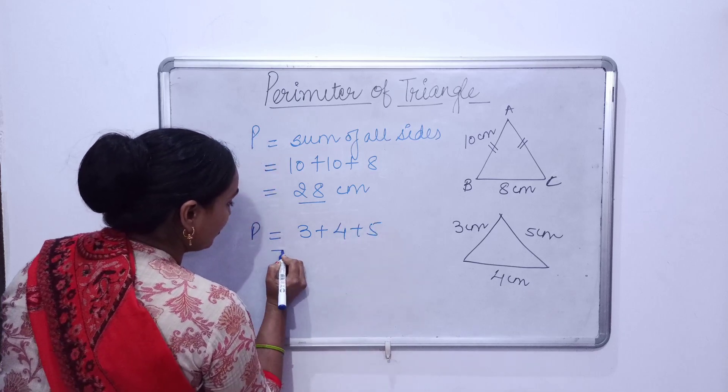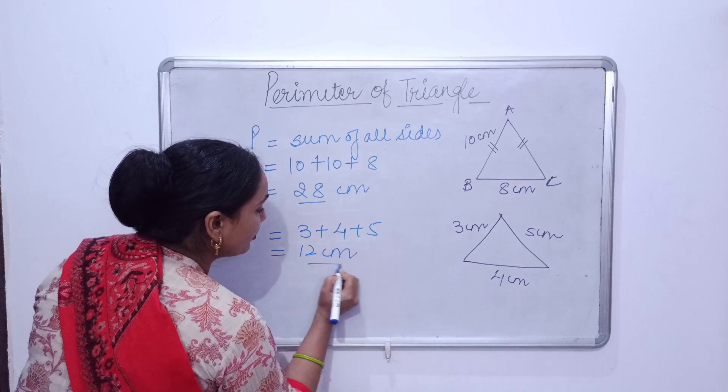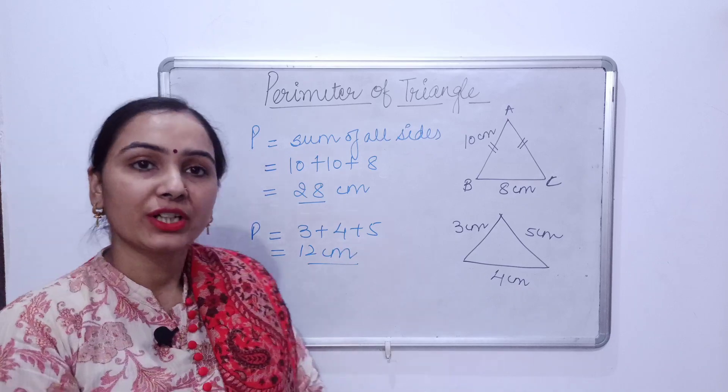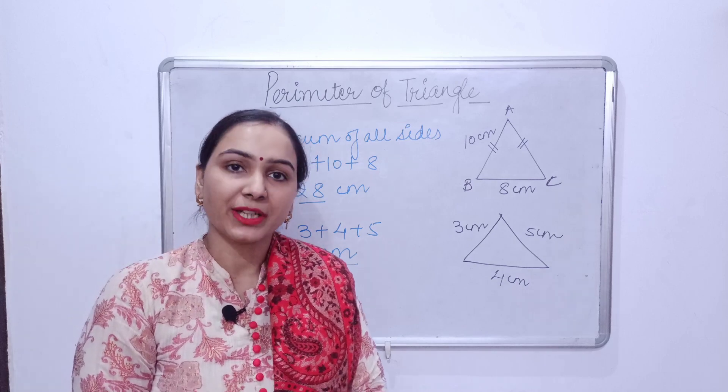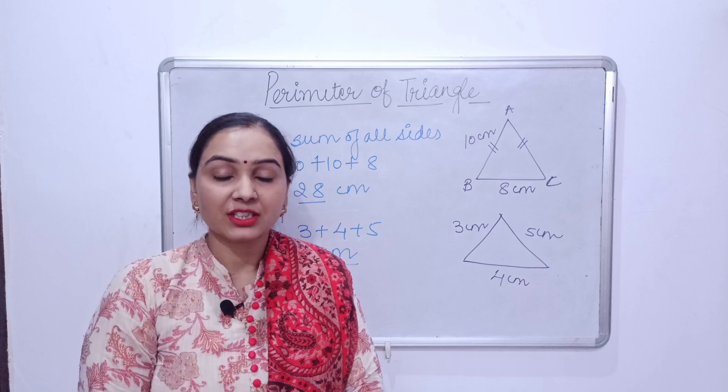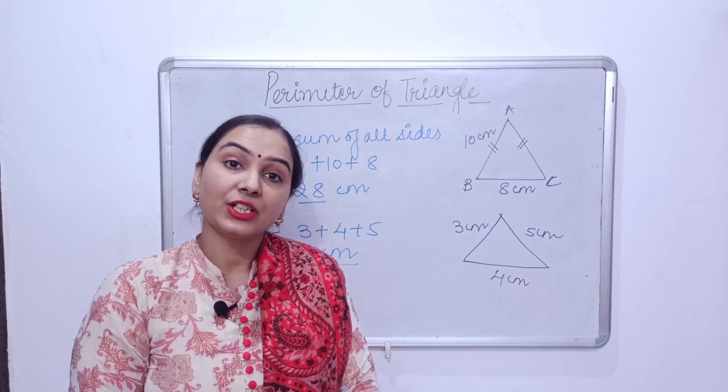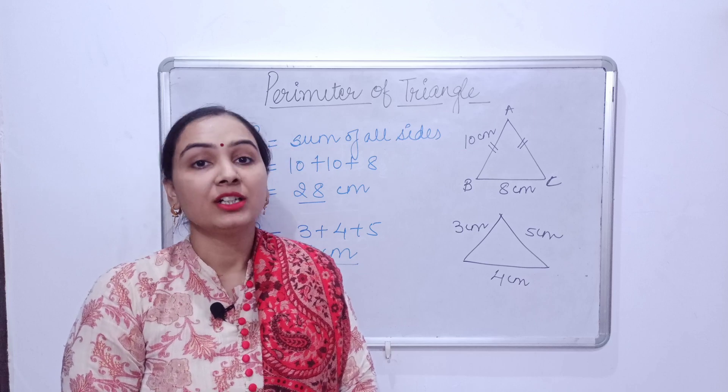So we will sum up all the sides as 3 plus 4 plus 5, which will be equal to 12 centimeters. So friends, in all the three triangles to find the perimeter, we will apply sum of all sides.